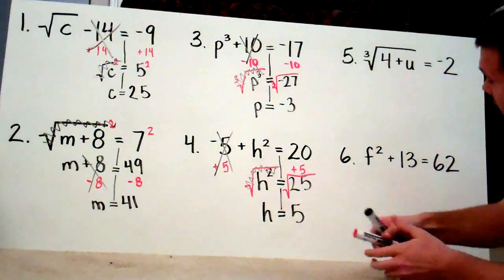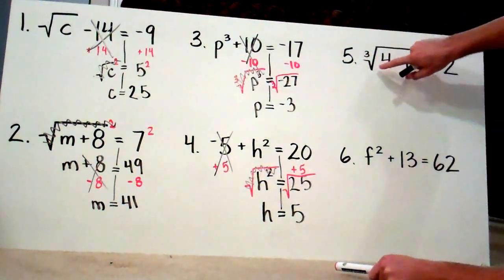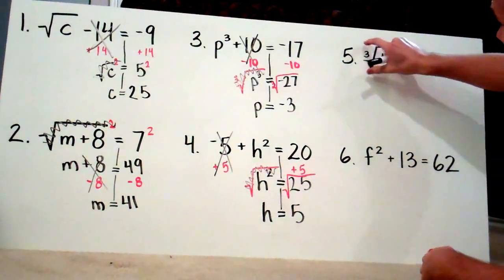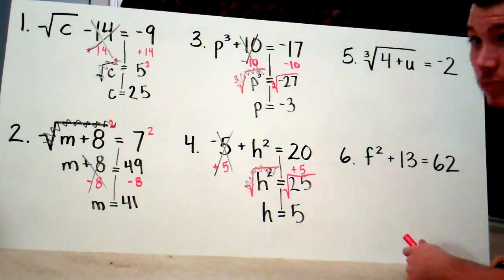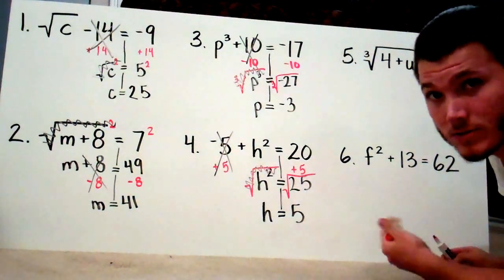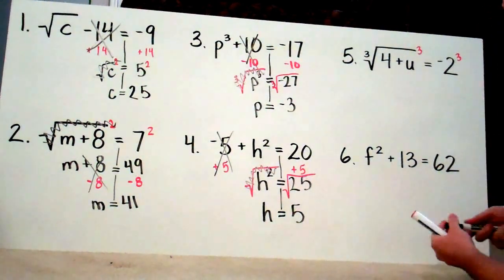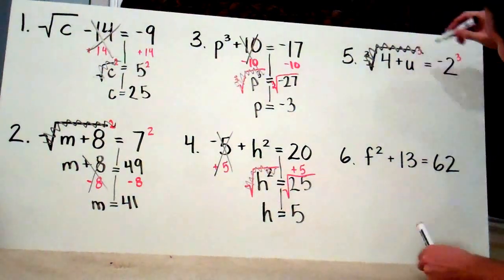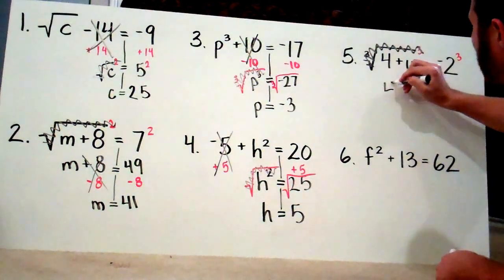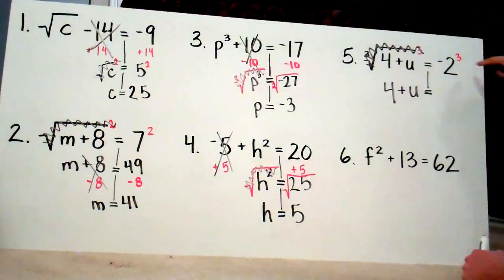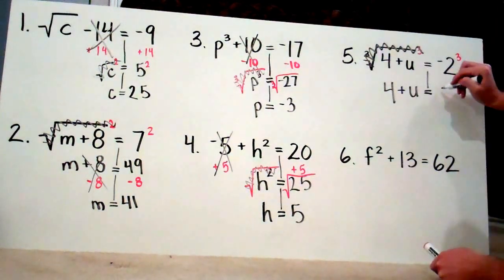For number 5, this entire expression is under a cube root, so since it applies to the whole thing, that's the first thing we want to get rid of. The inverse of cube root is to cube it, so I'm going to put both sides to the third power. These cancel out, leaving 4 plus u. Negative 2 to the third power: negative 2 times negative 2 is 4, and 4 times negative 2 is negative 8.